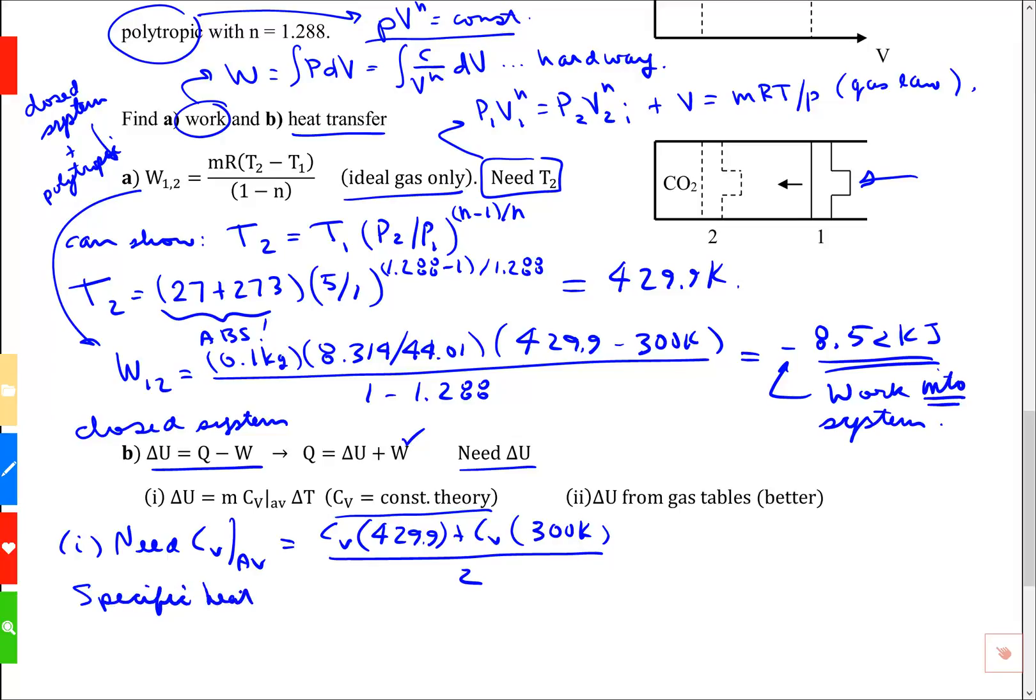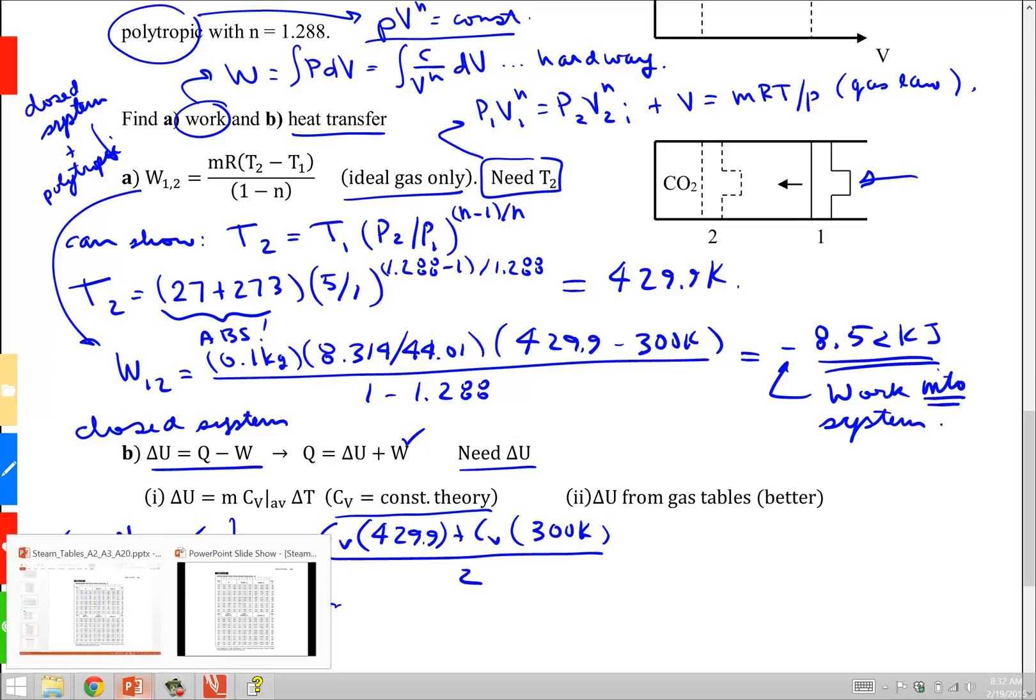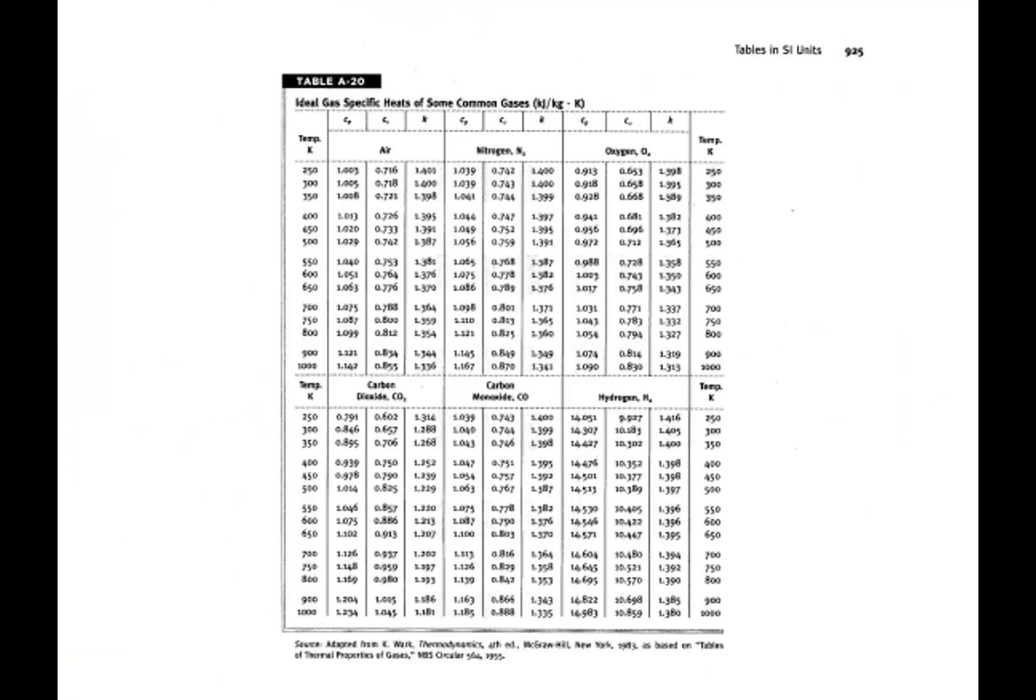We need a specific heat table. Let's go find one. Here we are. Ideal gas specific heats. Some common gases. Here's air. And down here is carbon dioxide. They're listed versus temperature. And we need 300.